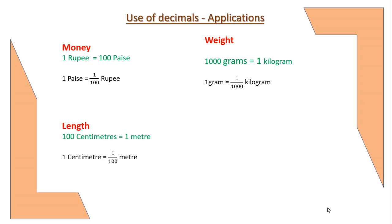Weight: 1000 grams is equals to 1 kilogram. 1 gram is equals to 1/1000 kilogram.